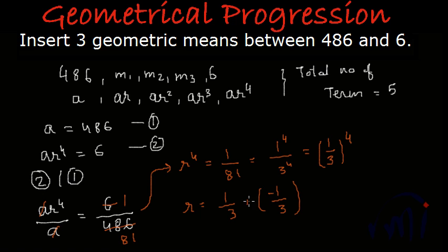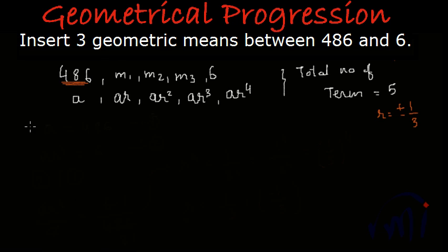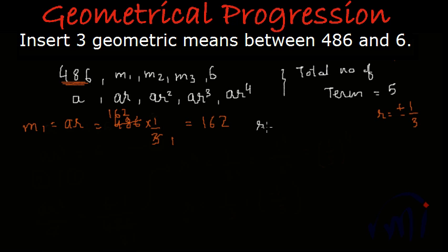We have found r = ±1/3 and we know a = 486, so now we can find the value of all the means. The first mean m1 = ar. With a = 486 and r = +1/3, we get 486 divided by 3, which equals 162. When r = −1/3, the first mean will be 486 divided by −3, which equals −162.